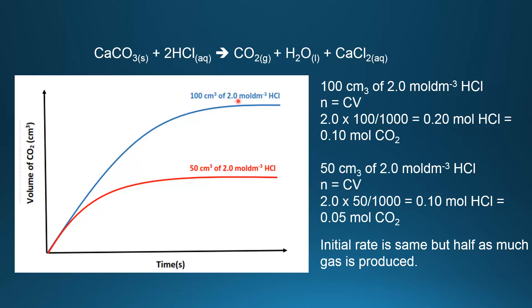The reason for the same initial rate of reaction is that they're both 2 mol/dm³ hydrochloric acid — the concentration of the acid affects how fast the initial rate is. The volume of gas produced depends on the number of moles, so I've calculated the number of moles for each.